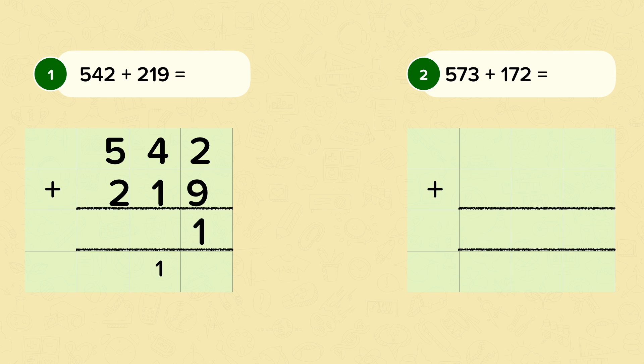Then you add all of the numbers in the tens. Four add one, add one, add one, is six. Then move on to the hundreds. Five hundred, add two hundred, is seven hundred. So your answer is 761. Well done if you got that correct.